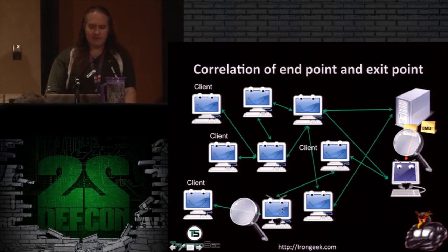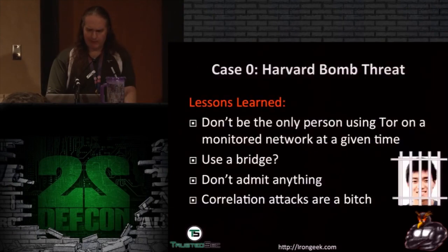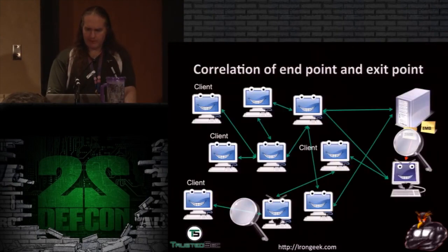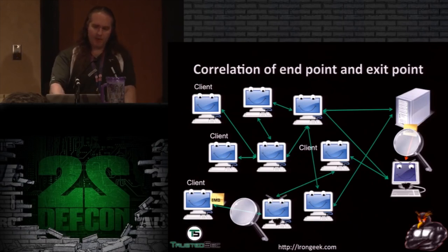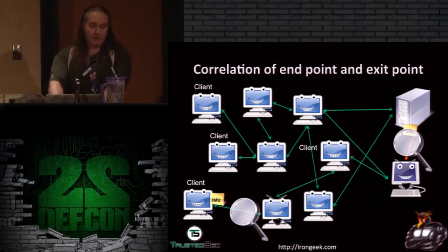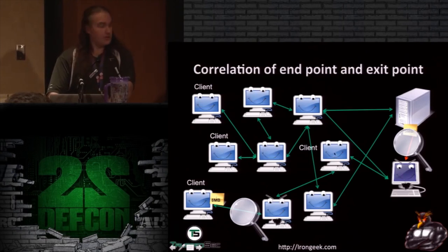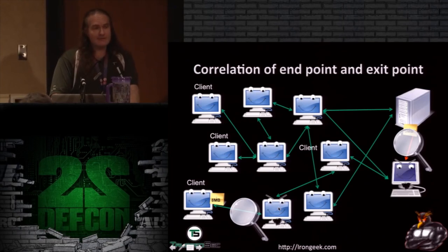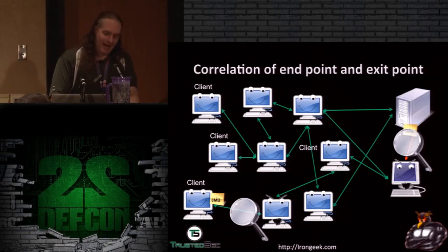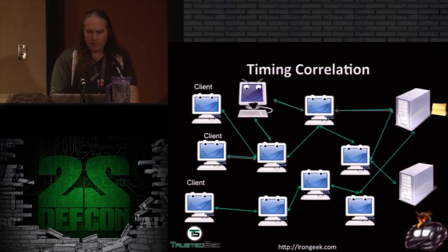Granted, there are three levels of encryption, so the messages don't look the same because they have extra crypto keys in the middle — the traffic is encrypted with different keys. But since it's the exact same size and the timing matches, they have a good idea of who it is. In the Harvard case, the correlation attack was simply: who was using Tor at that particular time? Timing correlation is similar.